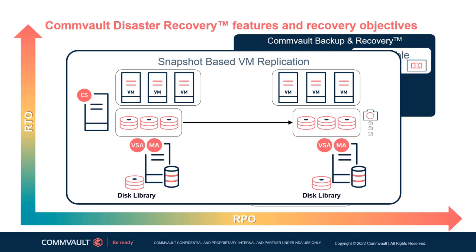The second VM replication mode uses IntelliSnap, which mounts either a hardware-based storage snapshot from a supported hardware vendor storage array or a VM software snapshot, and then reads data from the mount directly to the destination VM. Using snapshots eliminates the need to create a backup copy for replication, which provides faster replication and minimizes the impact on the production environment. Snapshot-based VM replication does not write data to backup media and therefore does not replace a regular backup. This replication mode requires the source to be VMware but shares other orchestration features such as test boot, failover, and failback.